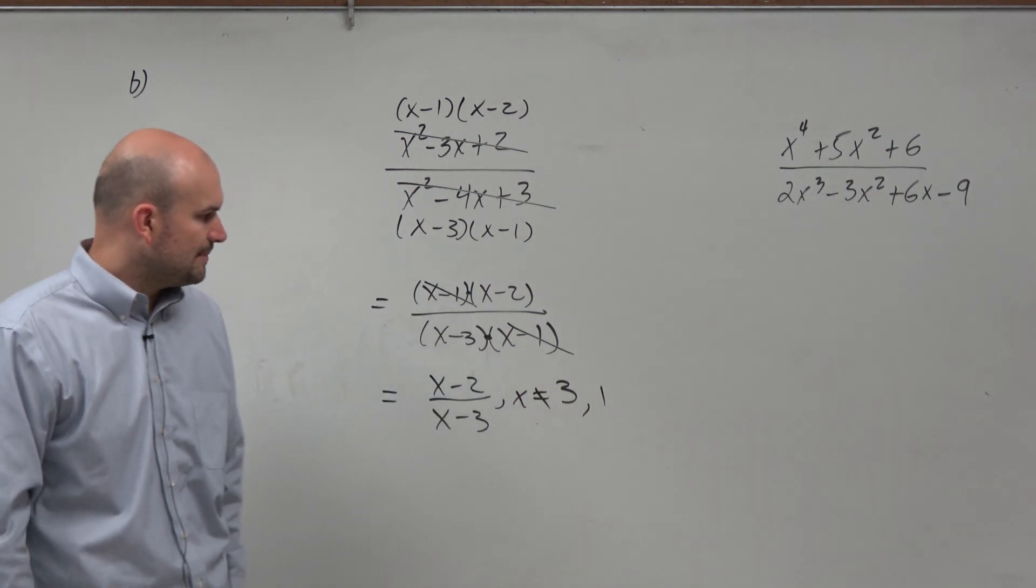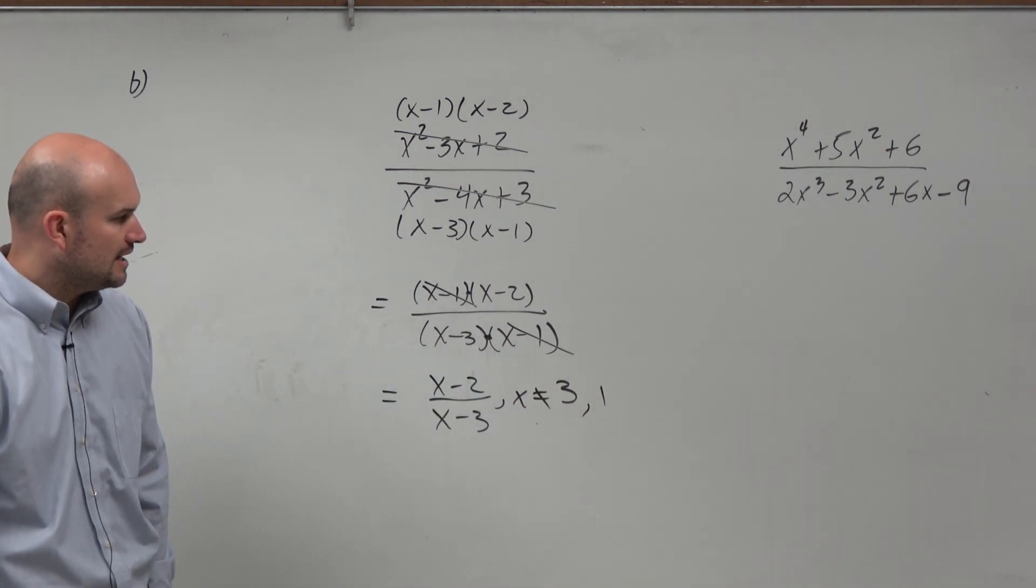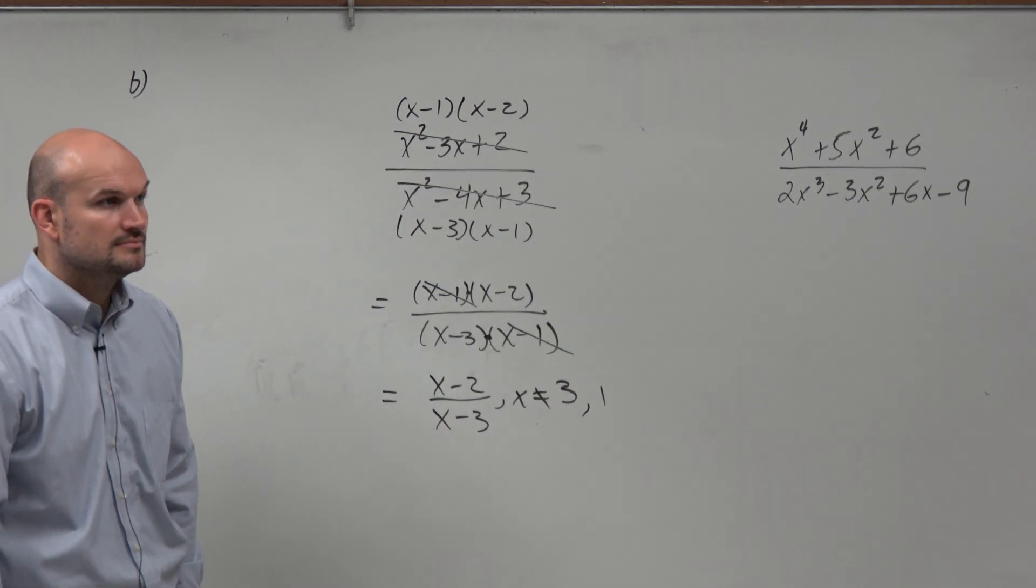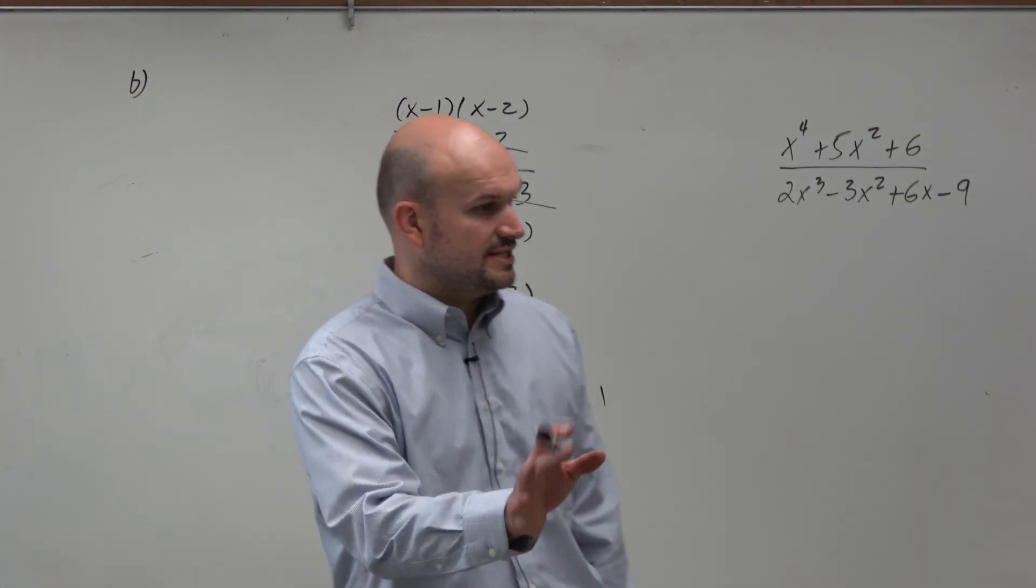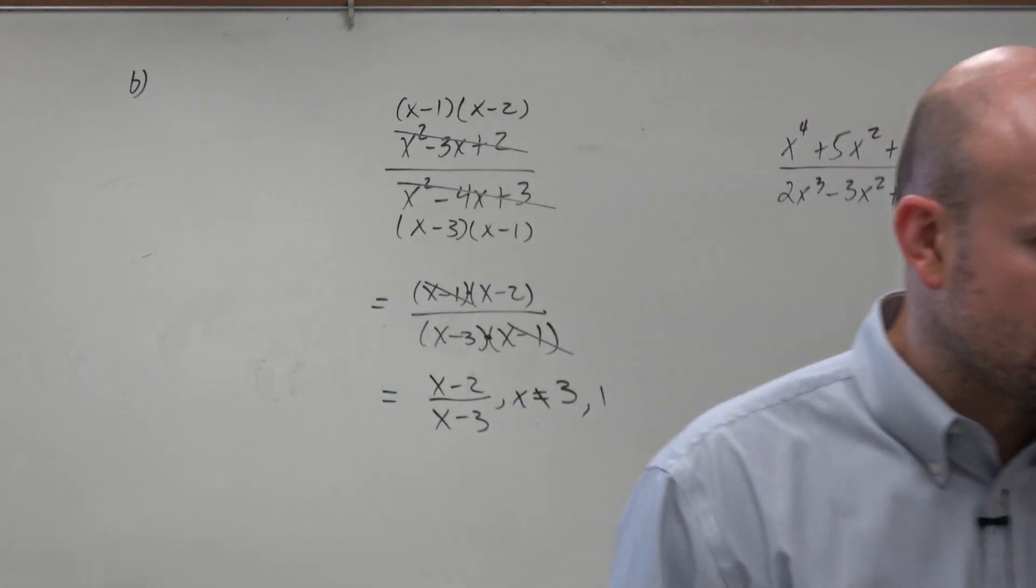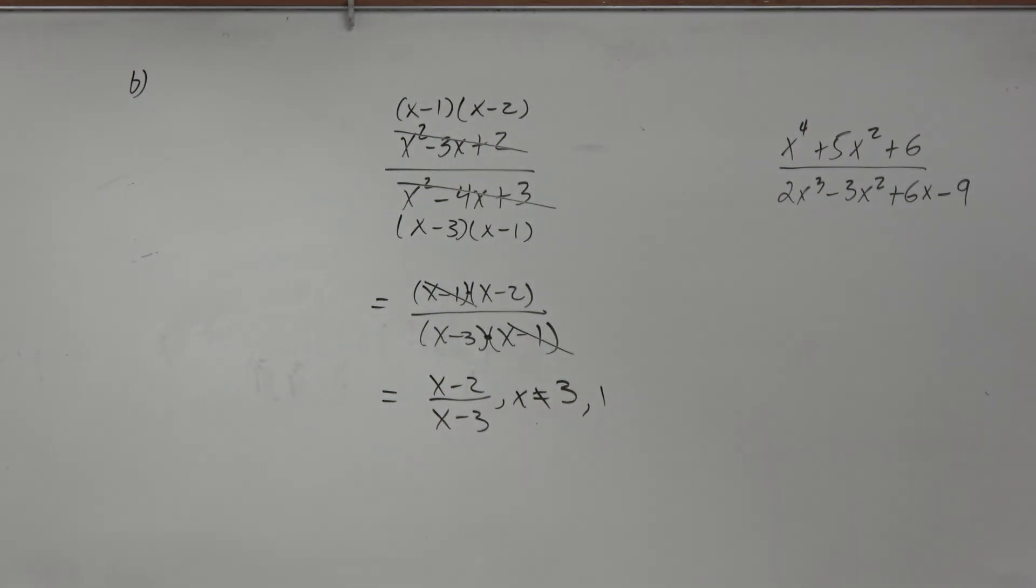So 1 is an excluded value. Even though it is a hole and 3 is a vertical asymptote, both are excluded values.